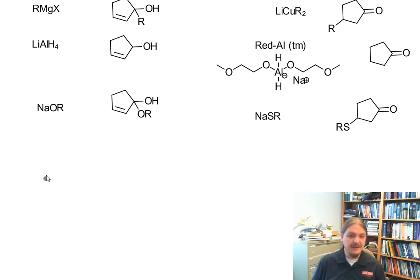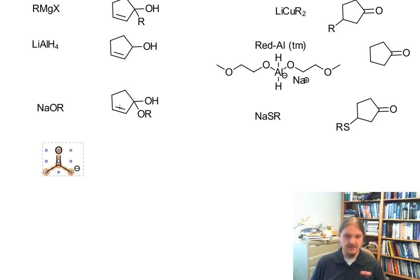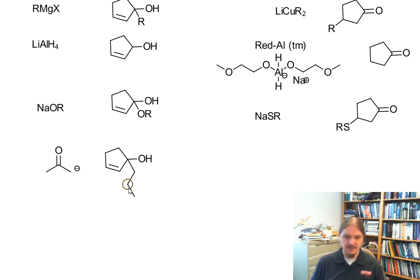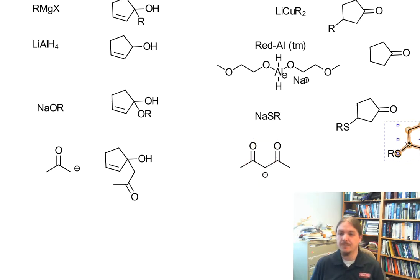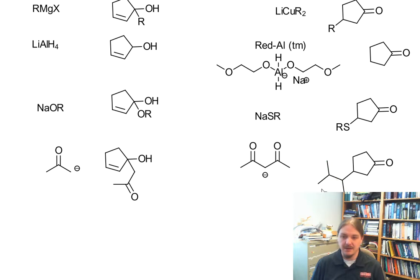Finally, enolate anions prefer to attack at the carbonyl carbon and do all kinds of reactions. But if that enolate anion is stabilized between two carbonyl groups — and there are a wide range of possibilities here, including nitriles and other groups that are like carbonyl groups but not quite — then these kinds of enolate nucleophiles prefer to attack at the 4 position.